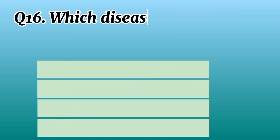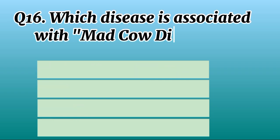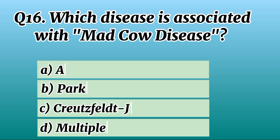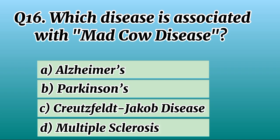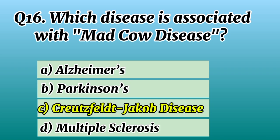Question 16. Which disease is associated with mad cow disease? Correct option C: Creutzfeldt-Jakob disease.